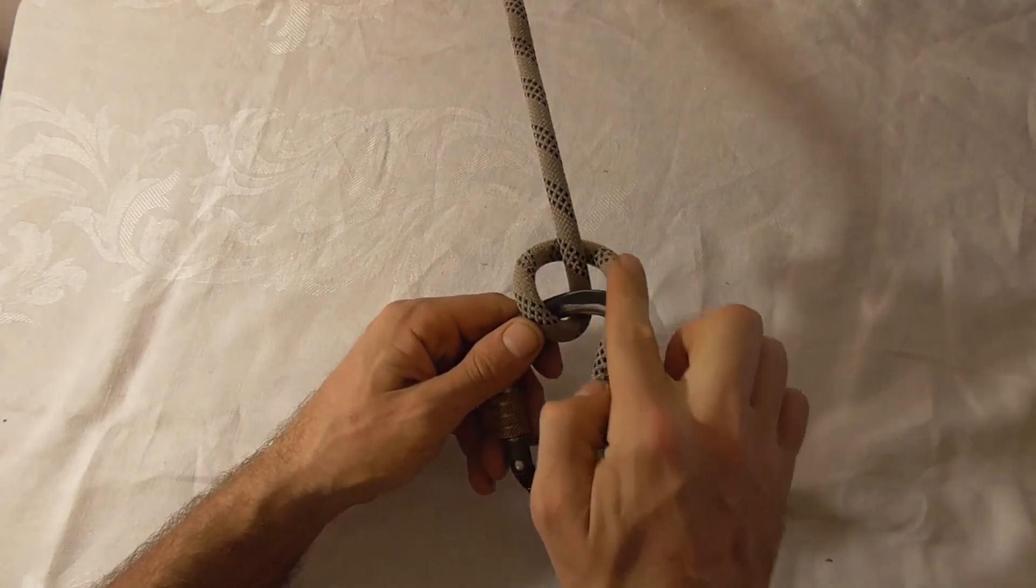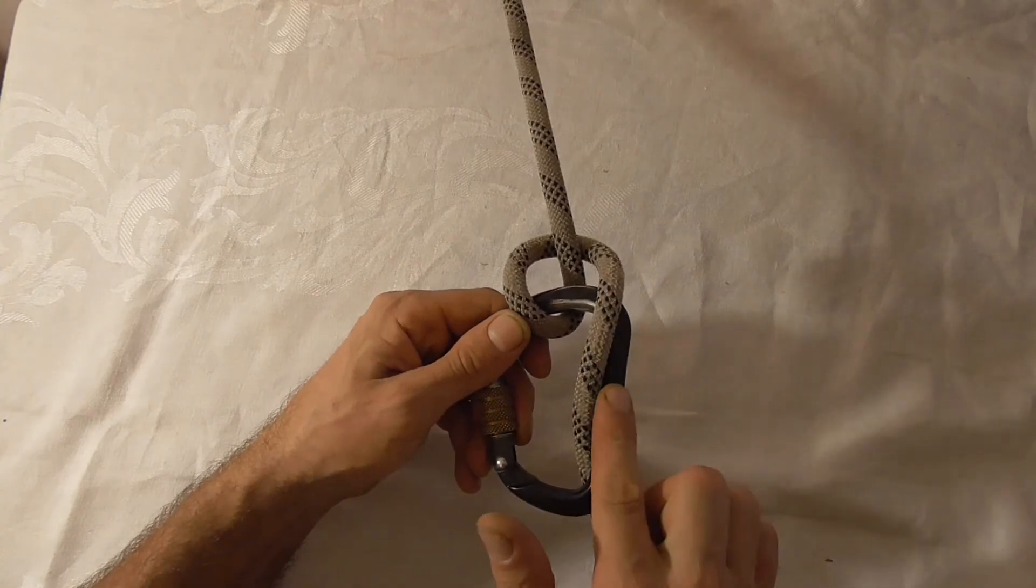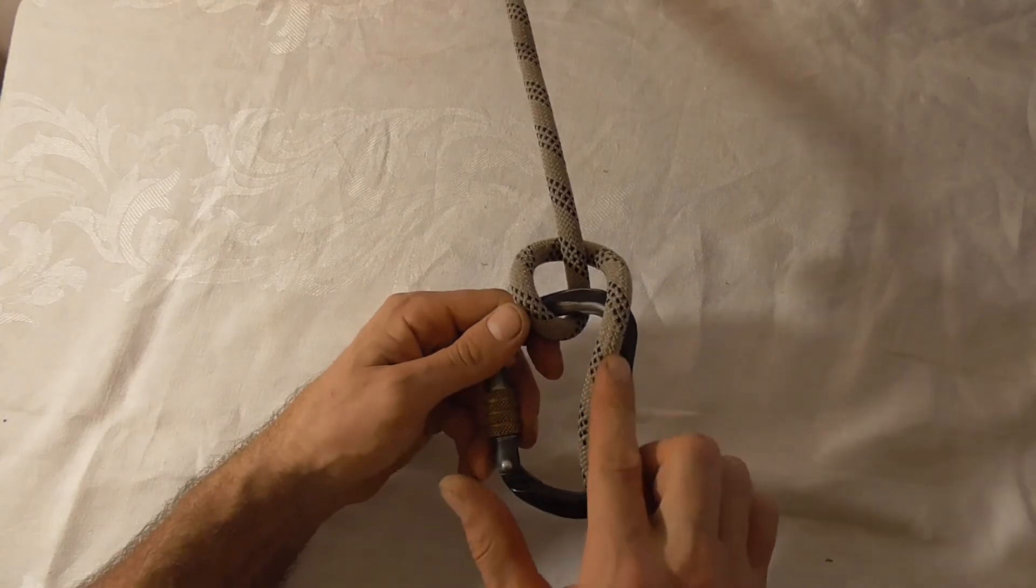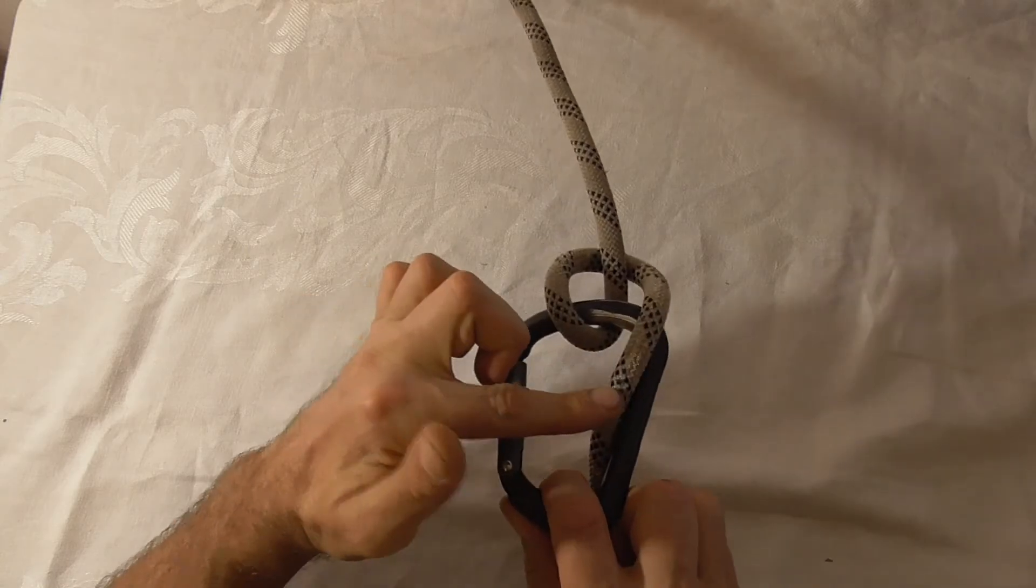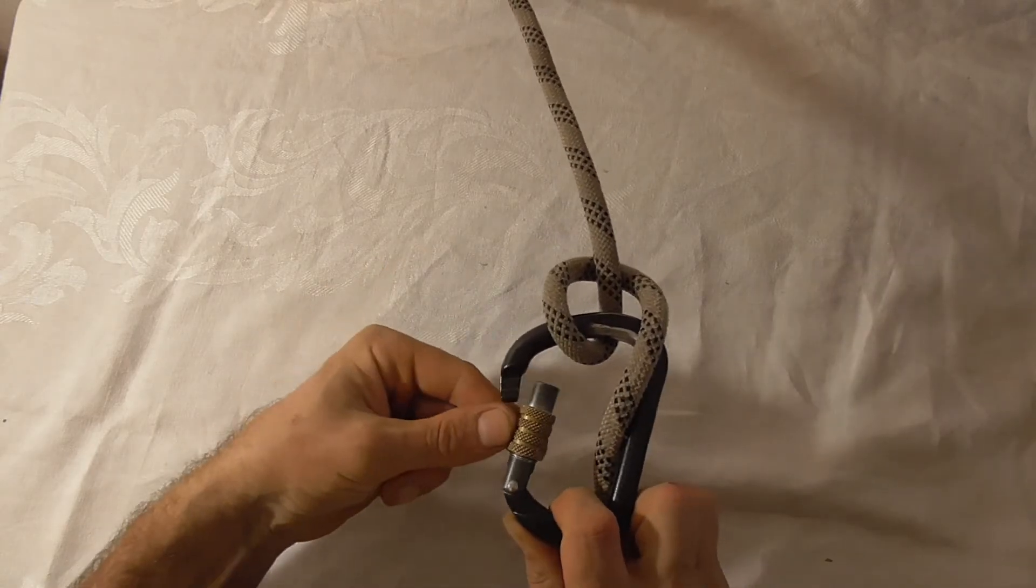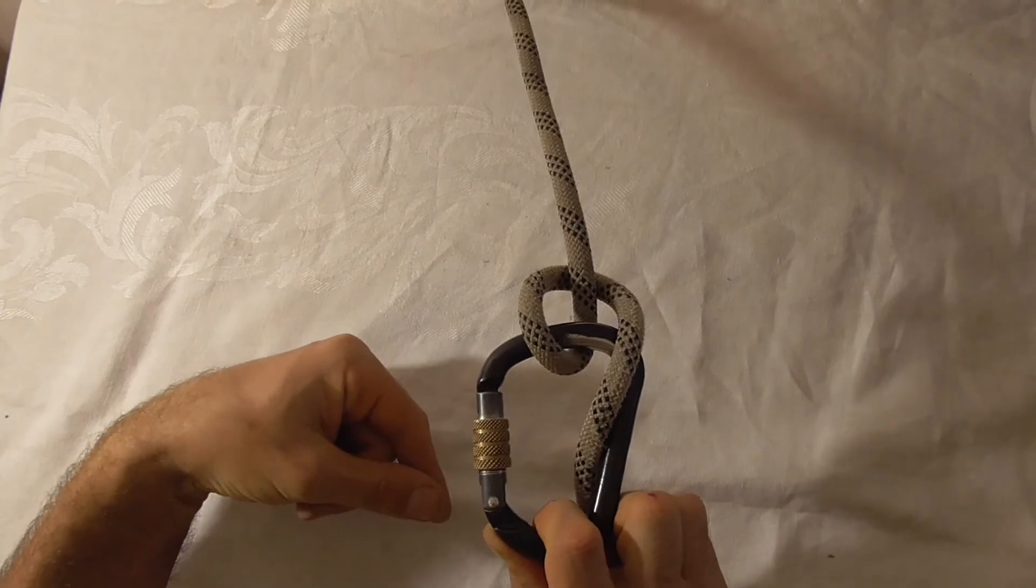Notice how I have this running along the spine of the carabiner. It's important that you clip in this way so that this does not interfere with the gate of your carabiner.